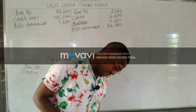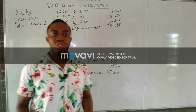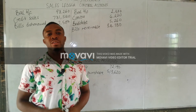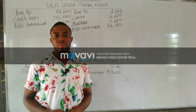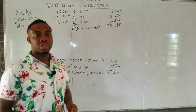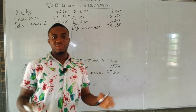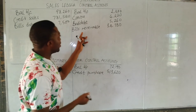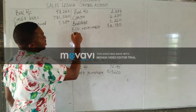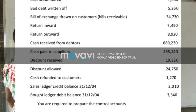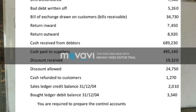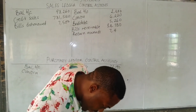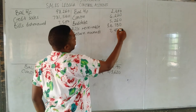Next is return inwards — goods returned back to the seller by the customer. If a customer bought an item on credit and returns it, this reduces their debt. So return inwards is posted to the credit side of the sales ledger. The amount for return inwards is $74,450.